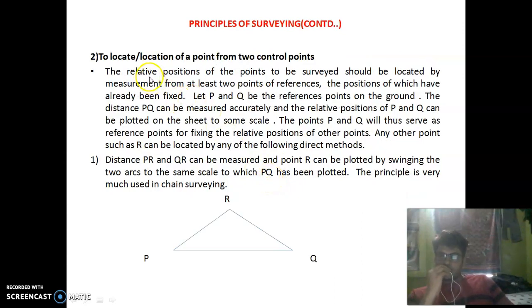Next principle: to locate a location of a point from two control points, the relative position of the points to be surveyed should be located by measurement from at least two points of reference, the position of which have already been fixed.